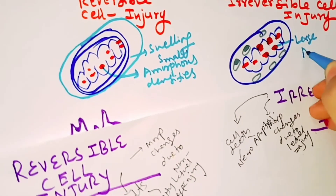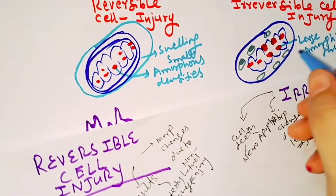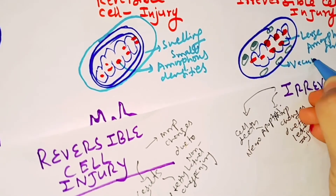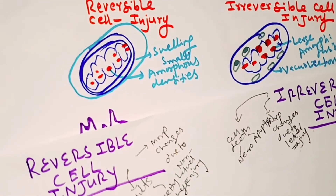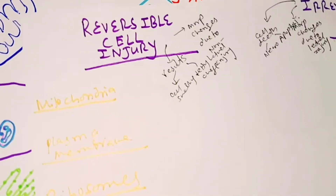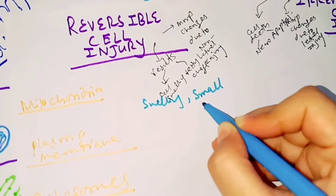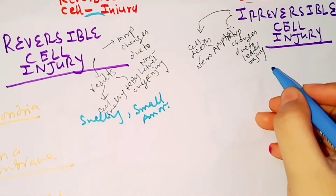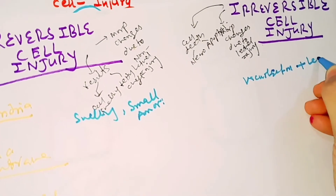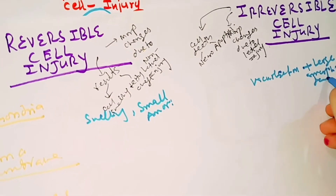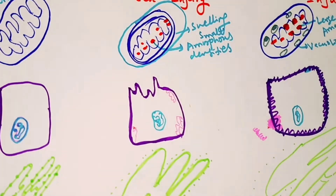So in irreversible injury, large amorphous densities form. Additionally, in irreversible cell injury there is also vacuolization of the mitochondria — vacuole formation occurs inside the mitochondria. Summary: reversible injury shows swelling and small amorphous densities, while irreversible injury shows vacuolization of mitochondria plus large amorphous densities.